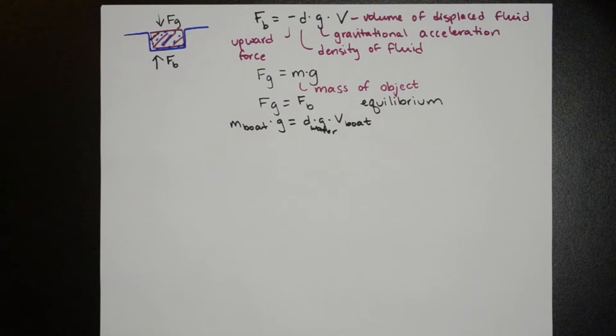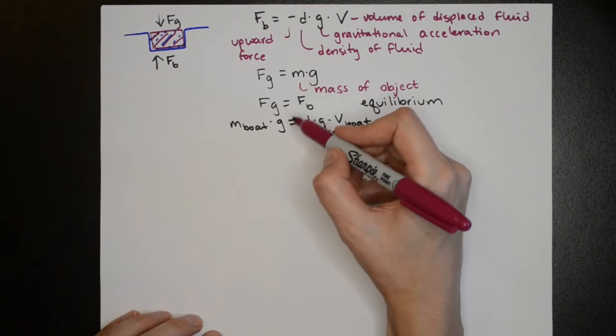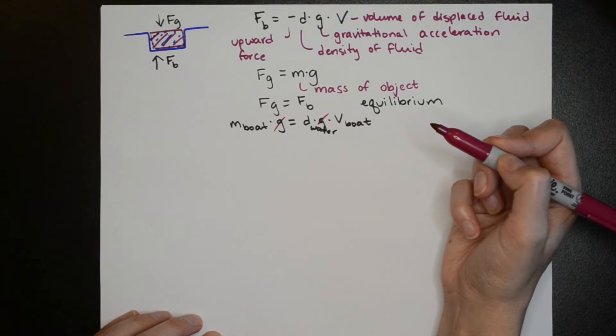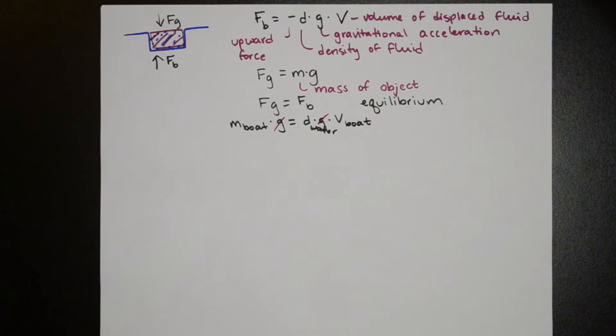As we load pennies we'll increase the mass of the boat and then the displaced volume will also increase. However we're only interested in the maximum number of pennies so we'll assume the maximum amount of displaced water which will be the volume of the entire boat. We can divide this entire equation by g which will eliminate that from both sides.